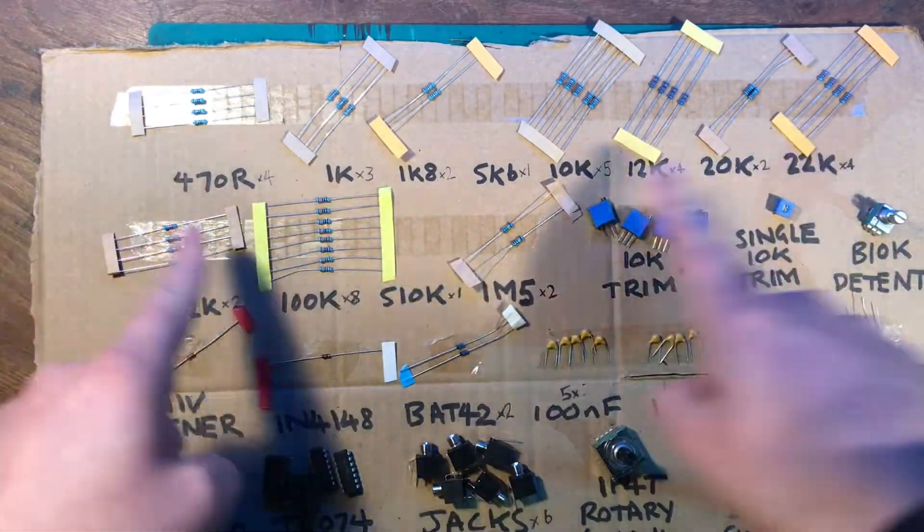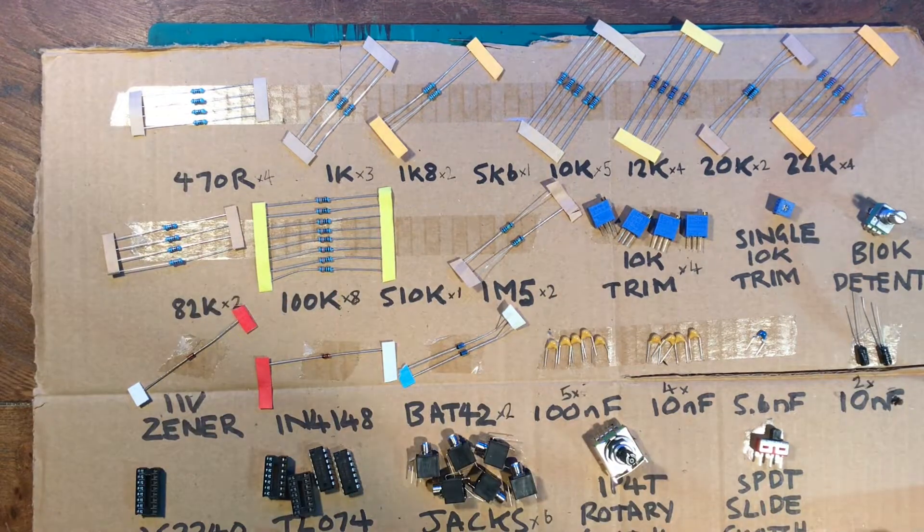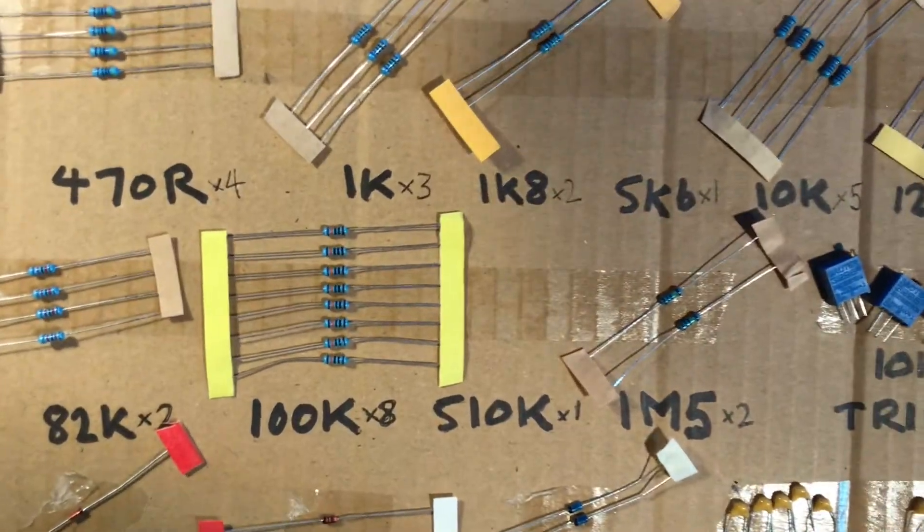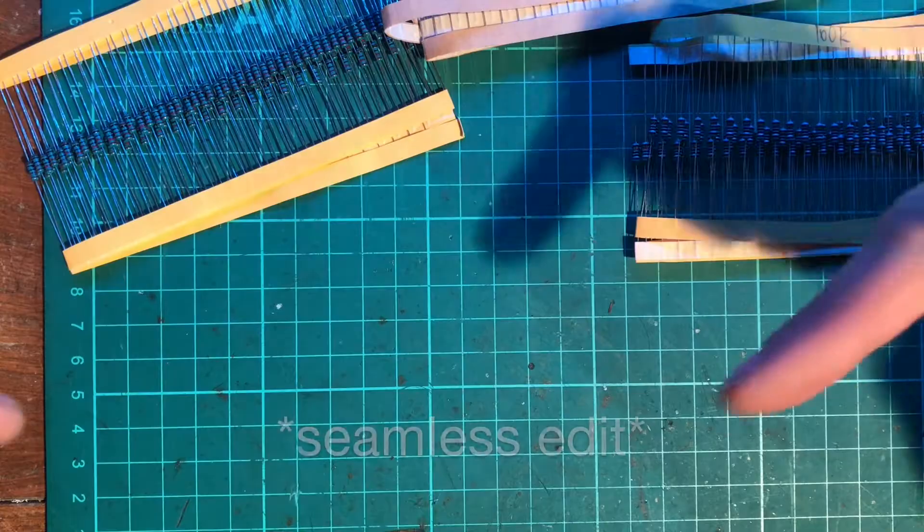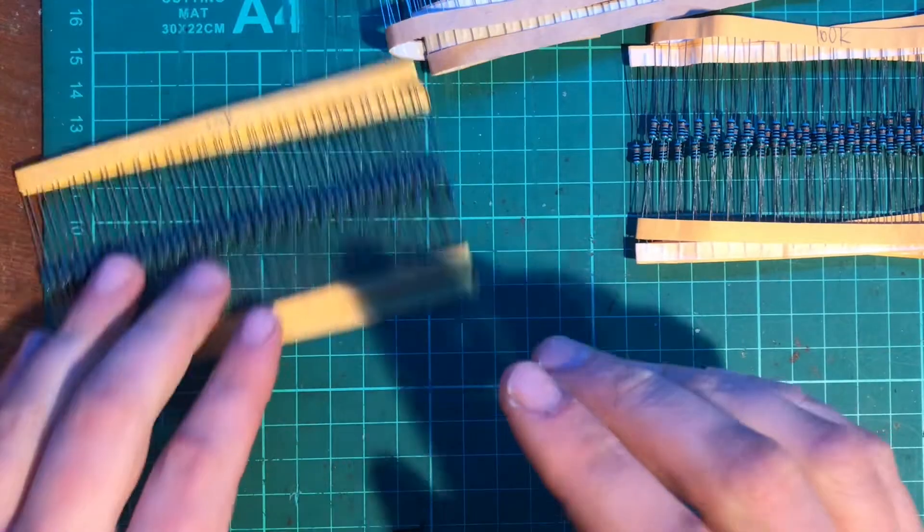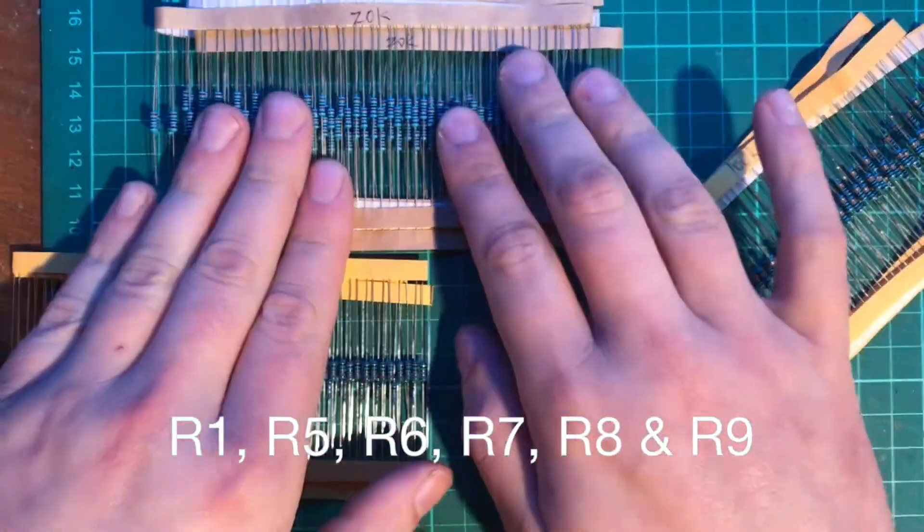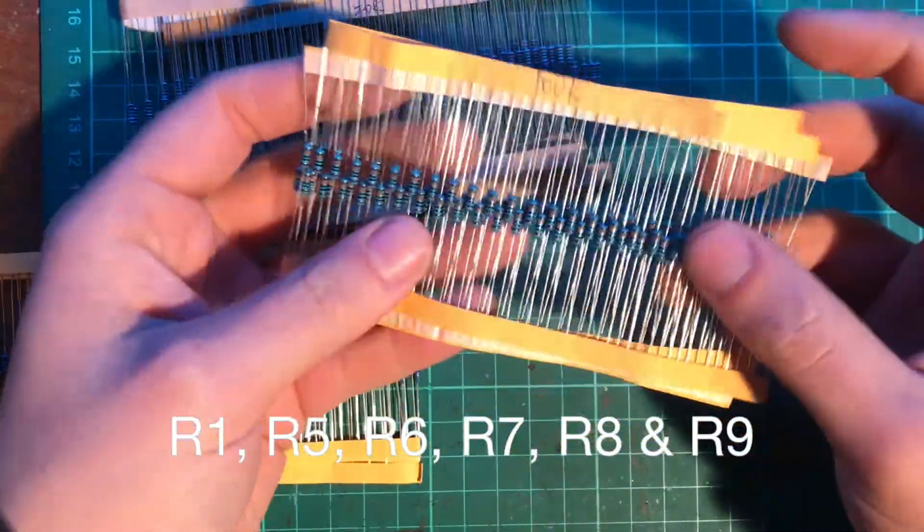Starting with the resistors, they're all just quarter watt one percent metal film. And there are a few more vital resistors for the tuning: 10Ks, 20Ks and 100Ks.